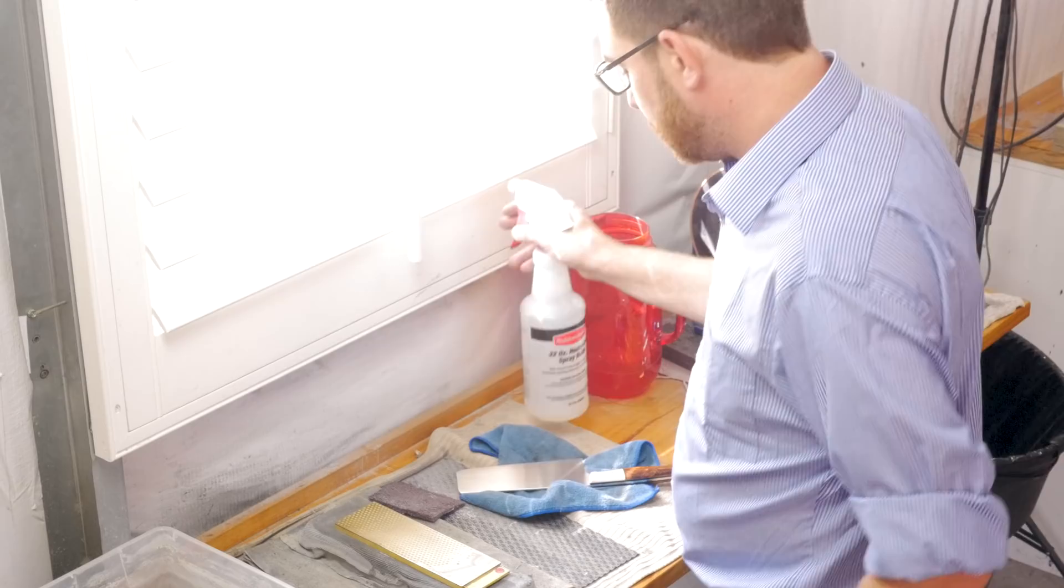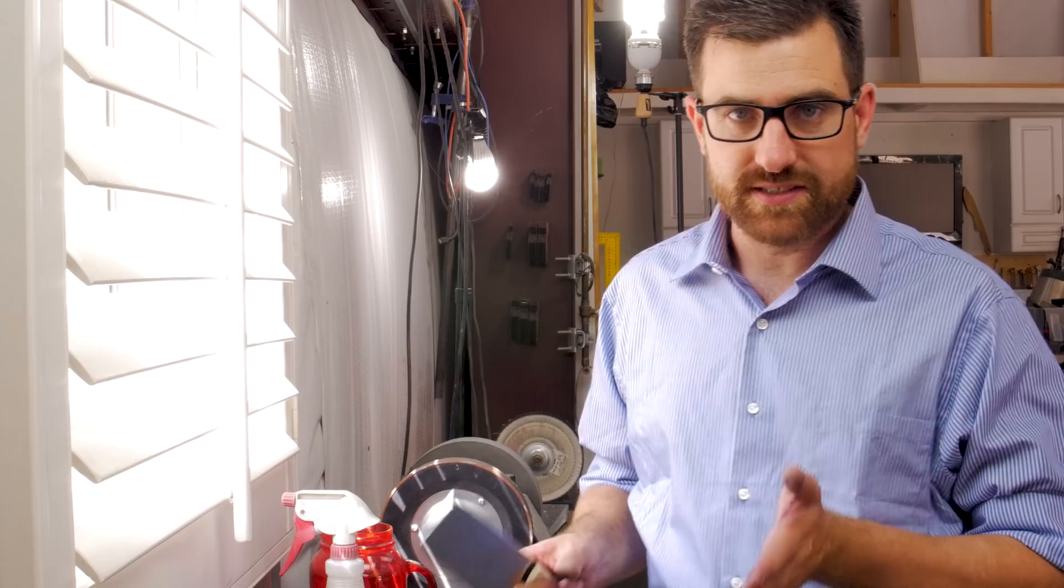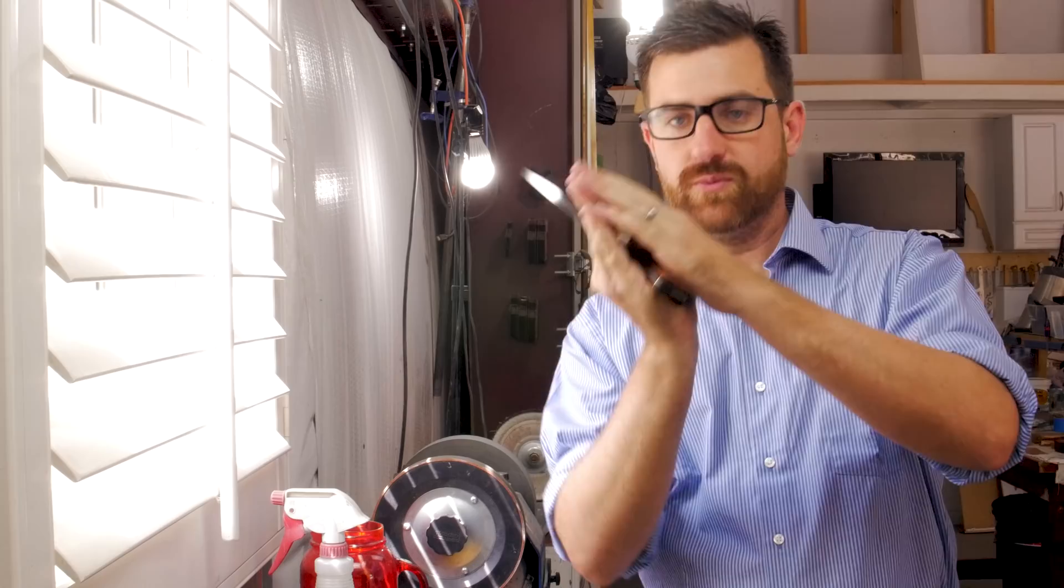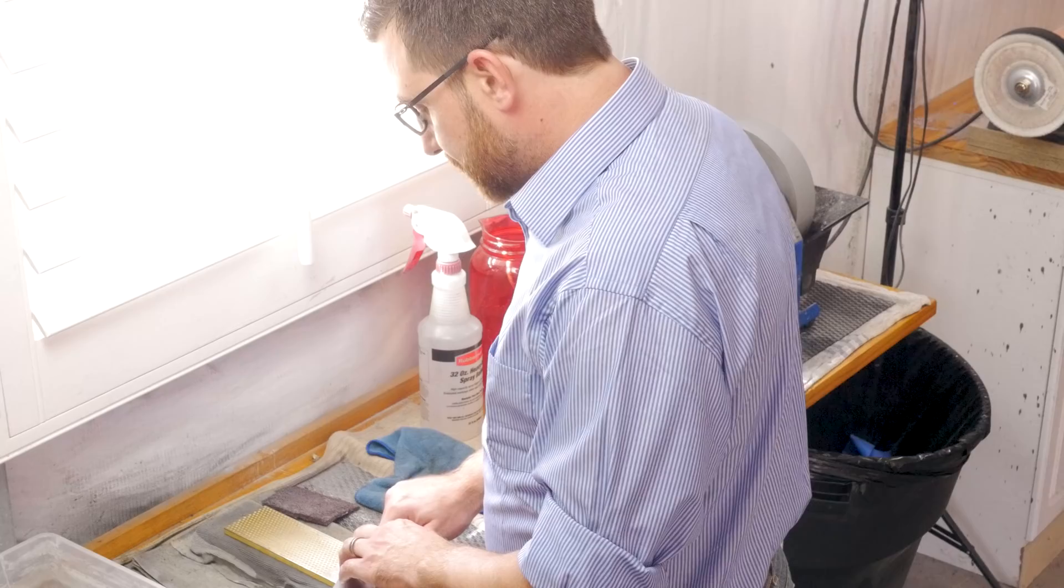I'll find out what side the burr's on to start. And I always work from the opposite side. So what you're going to start doing at this point is you're going to start working that burr from one side to the other. And you work it back and forth, back and forth progressively finer grits till it falls off. I'll just kind of show you how I do it.